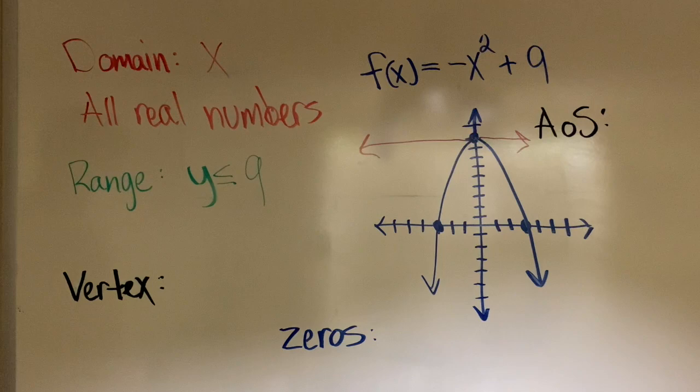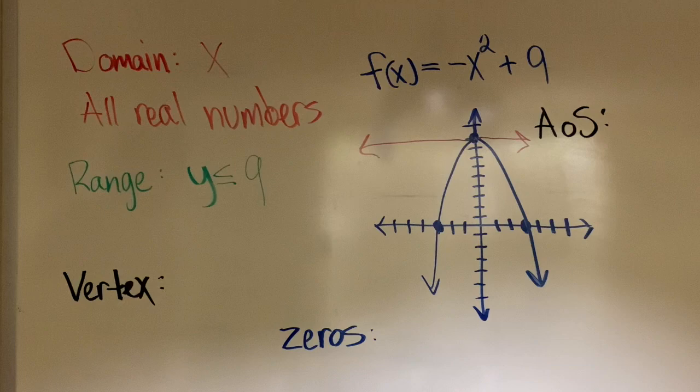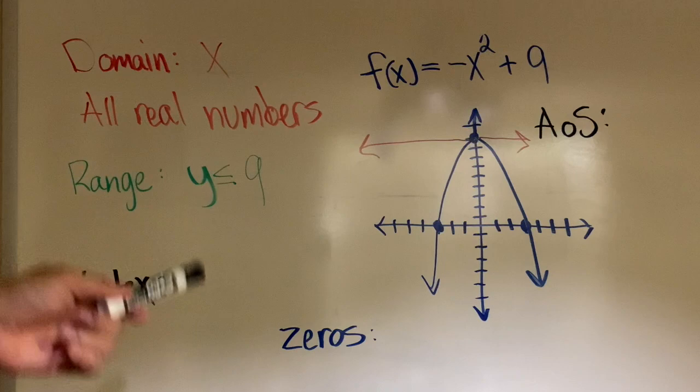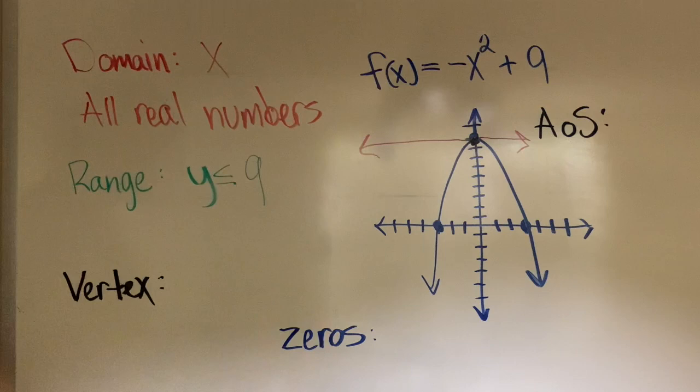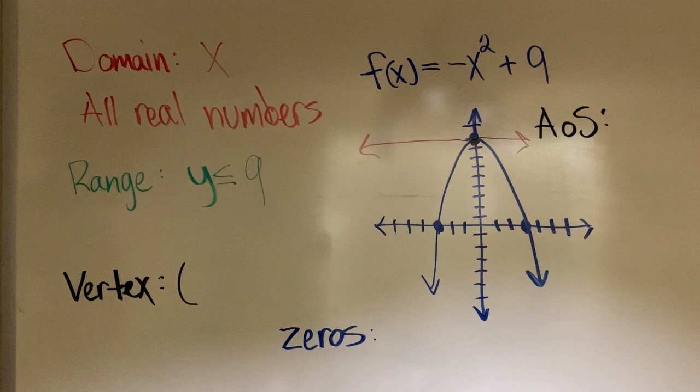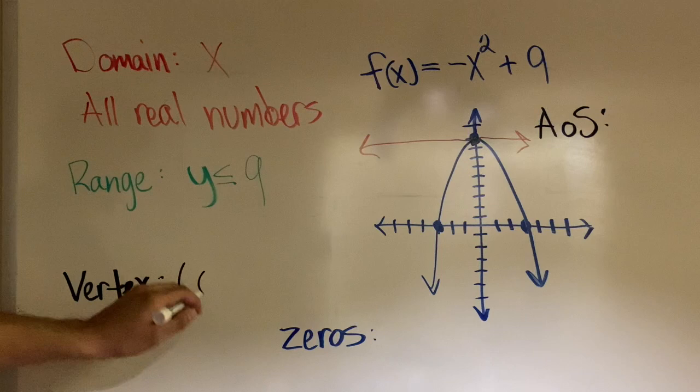One of the things we need to remember about the vertex is that the vertex is the minimum or the maximum point of the parabola. So when you analyze this parabola, you notice that you do have a maximum point. So that maximum point is your vertex. All I need to do is answer this as a coordinate point, which would be, in this case, x is 0 and the value of y is 9. That would be the vertex.